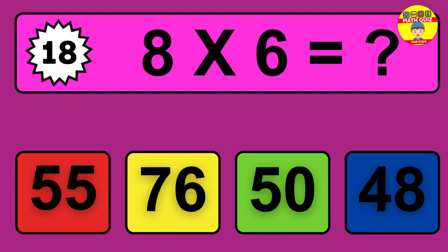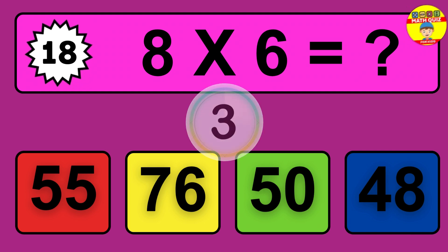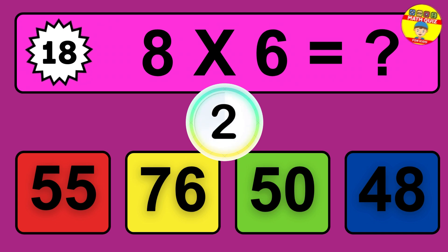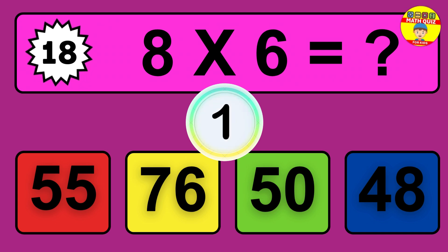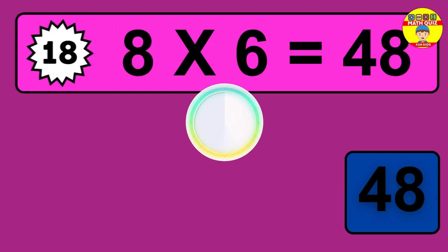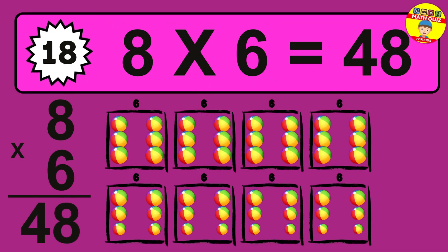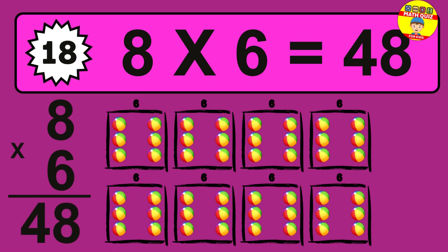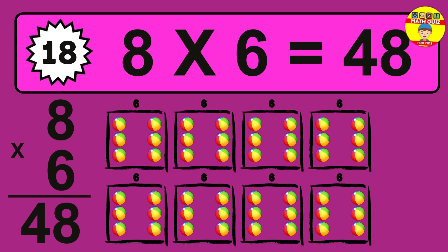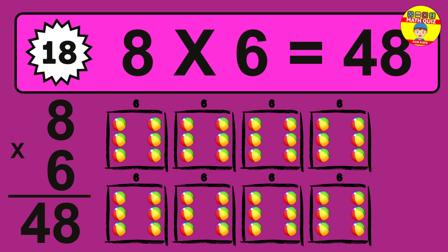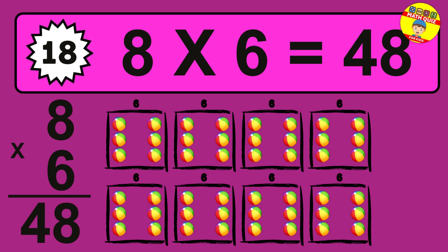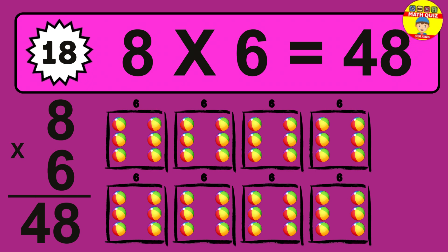Question 18. 8 times 6 equals what? The answer is 8 times 6 is 48. To calculate, we have 8 groups with 6 balls each one. So how many balls do we have? 48 balls.